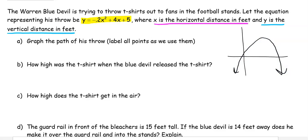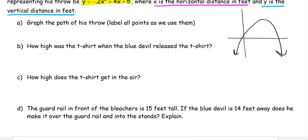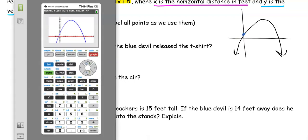Now as we answer the questions, we'll label this information on our graph. Part B: How high was the t-shirt when the Blue Devil released it? We're talking about when he let go - that's the starting point, which is the y-intercept. This is something you can find directly from standard form, from the equation, or the table, or I can calculate it. Go to 2nd Trace, number 1.